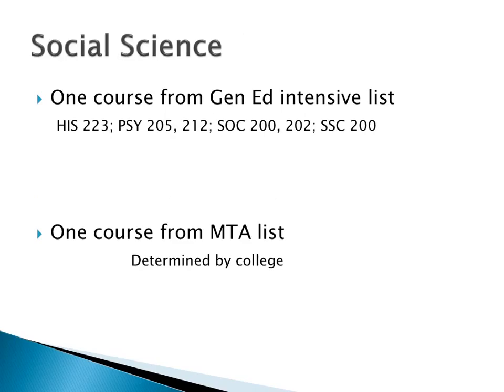The last category is Social Science, and it works almost identically to the Humanities and Fine Arts category. Two courses are required: one must be from the Gen Ed Intensive List in the Social Science area, and the other from the MTA List in the Social Science area. The Gen Ed Intensive courses for Social Science are History 223, Psych 205 and 212, Sociology 200 and 202, and Social Sciences 200. Just like in the Humanities category, the two courses you choose must have different designators.